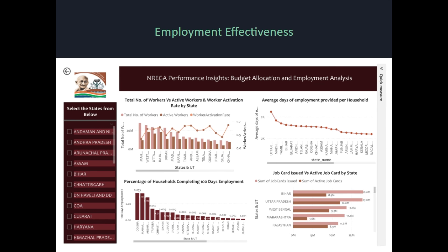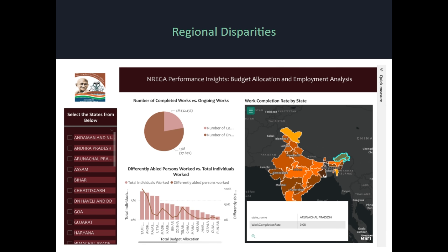The first dashboard is employment effectiveness. I prepared a few charts to help analyze employment effectiveness across states. Certain states have a high number of job cards issued but the active job card count is very low, which means people are not making use of it. We also came across regional disparities and used different charts to show how much work is completed versus how much is pending.